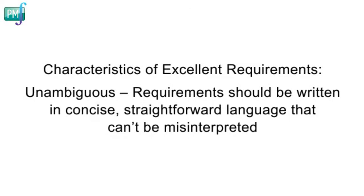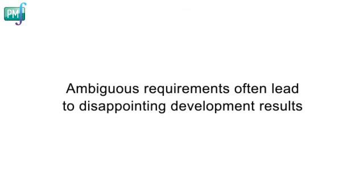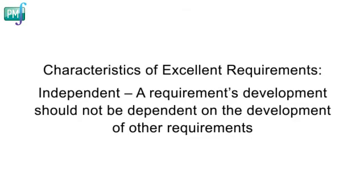Requirements should be unambiguous. Write requirements in simple, concise, and straightforward language so that nobody reading them could possibly misinterpret them. If requirements are not explained precisely and completely, there is the danger that developers will end up trying to fill in the blanks on their own. Requirements that are too ambiguous could also end up creating different expectations on the part of stakeholders, leading to disappointment with the development results. Requirements should also be independent — if a requirement's development is dependent on the development of other requirements, it might cause prioritization and planning problems.